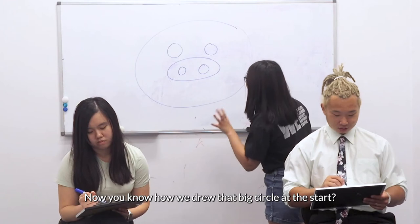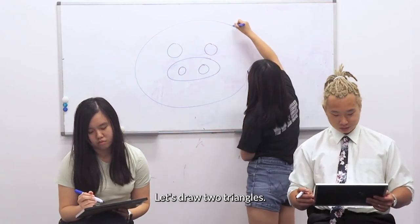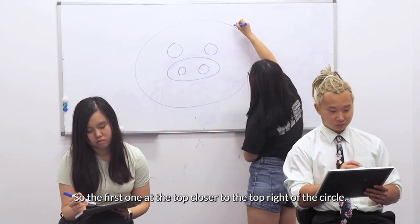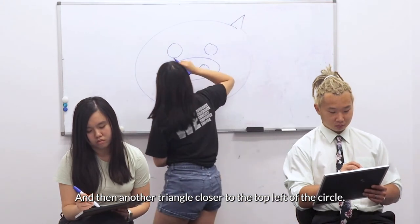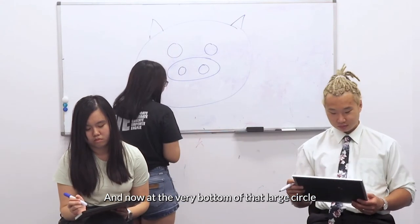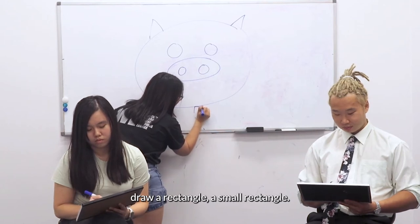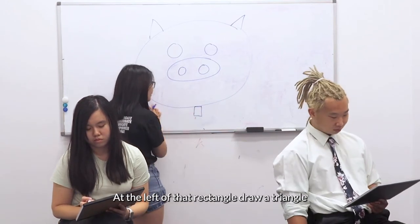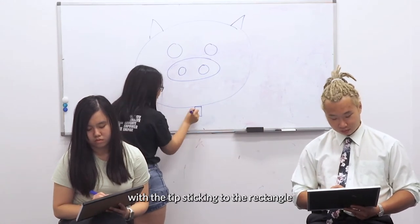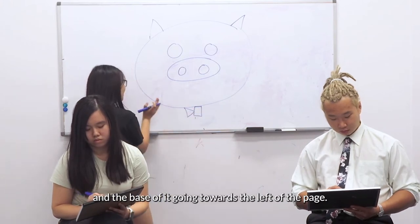You know how we drew that big circle at the start — let's draw two triangles. The first one at the top, closer to the top right of the circle. And then another triangle closer to the top left of the circle. Now at the very bottom of that large circle, draw a small rectangle. At the left of that rectangle, draw a triangle with the tip sticking to the rectangle and the base going towards the left of the page.